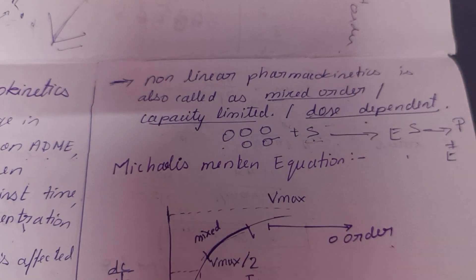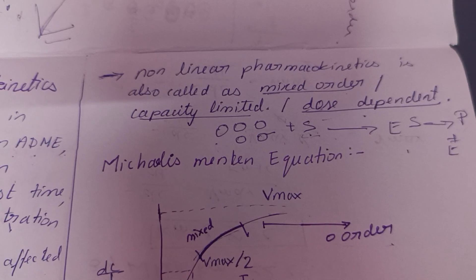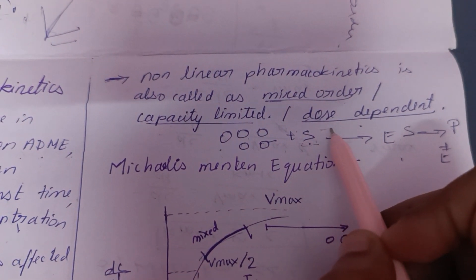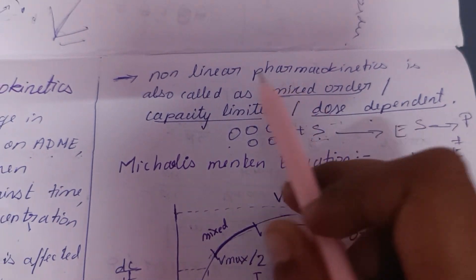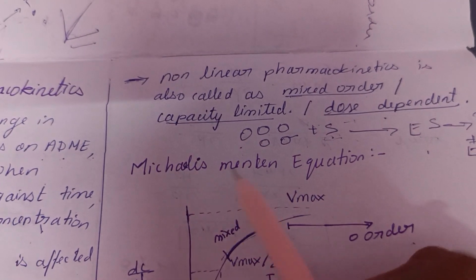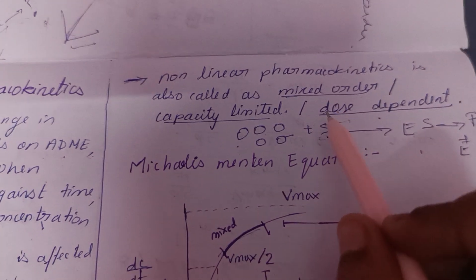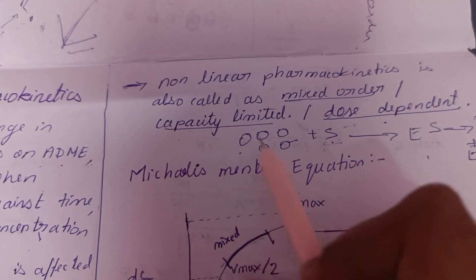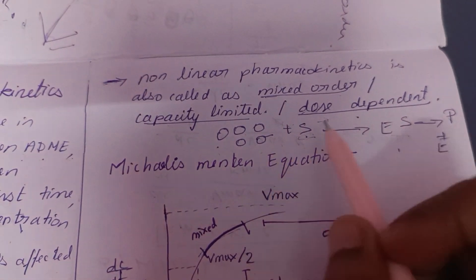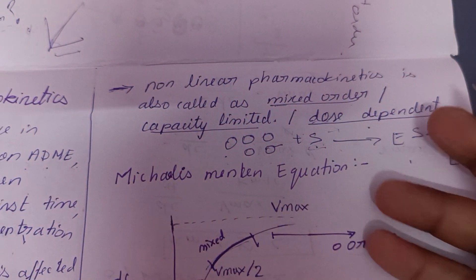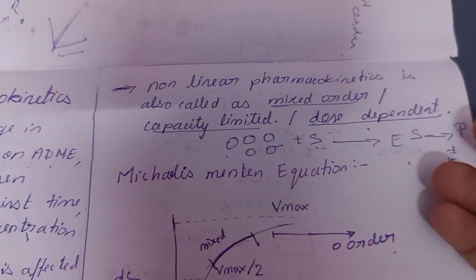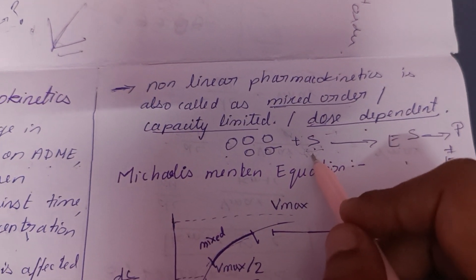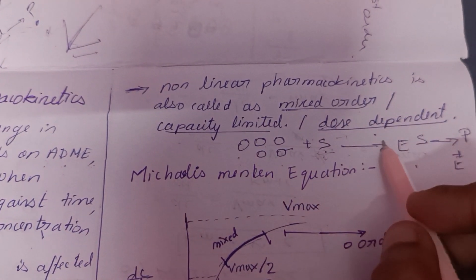So non-linear pharmacokinetics is also called mixed order or capacity-limited or dose-dependent pharmacokinetics. Non-linear combines zero order and first order — that is why it is called mixed order kinetics. Capacity-limited means enzymes reach saturation — either first-order followed when substrate concentration is low, or zero-order when saturation is reached.